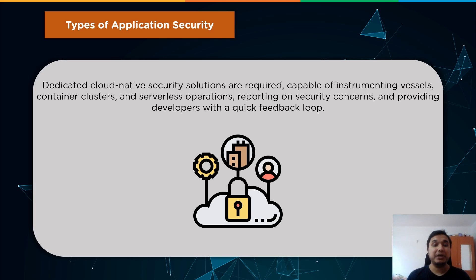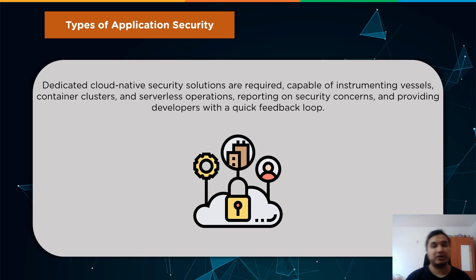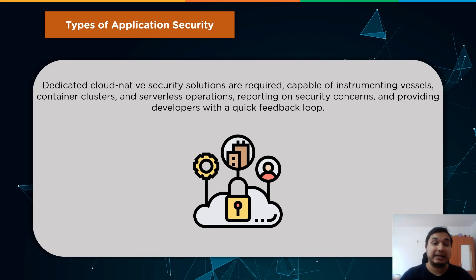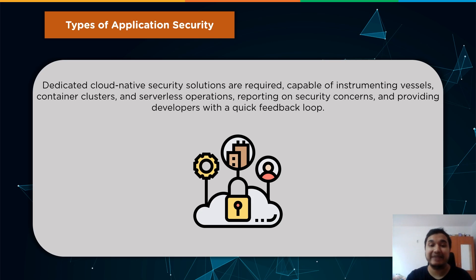The third type is cloud native application security. Infrastructure and environments are often built up automatically in cloud native apps depending on declarative configuration, known as infrastructure as code (IaC). Developers are tasked with developing declarative settings and application code, both of which should be secure. Because practically everything is defined during the development stage, shifting left is even more crucial in cloud native setups. Traditional testing techniques can help, but dedicated cloud native security solutions are mandatory — capable of instrumenting containers, container clusters, and serverless operations, reporting on security concerns, and providing developers with a quick feedback loop.